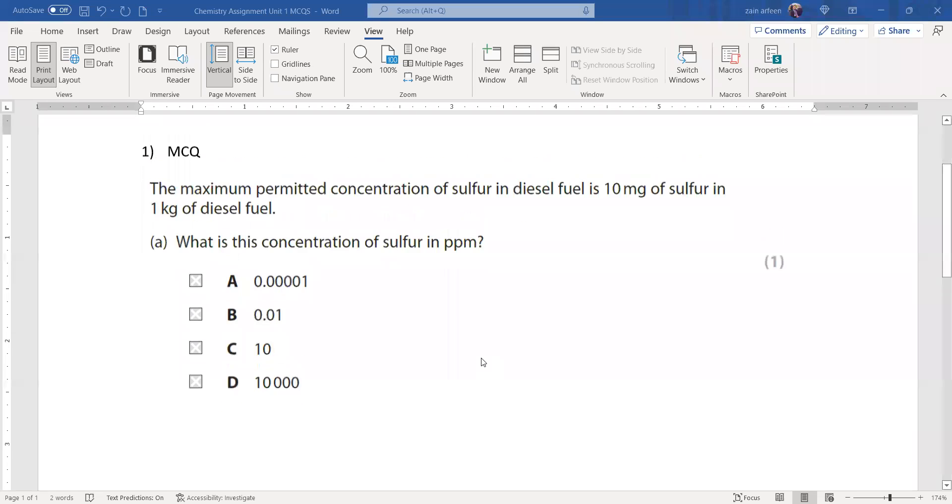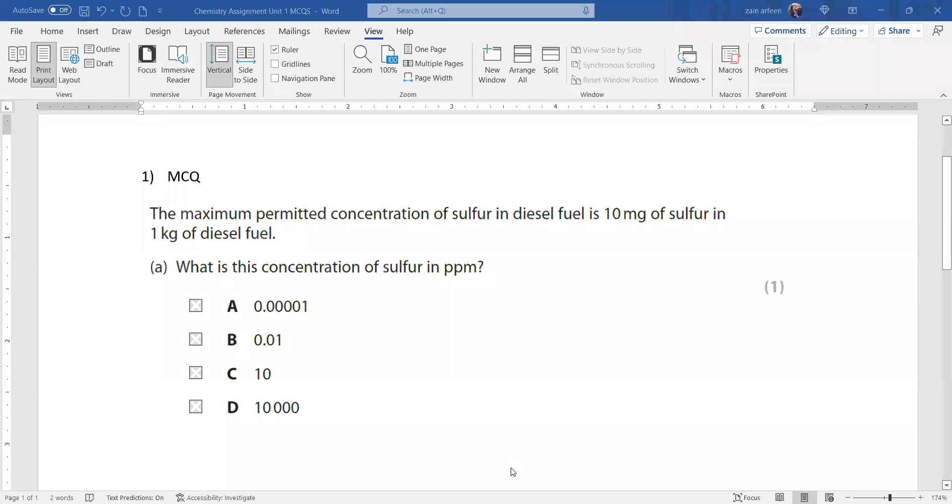In this question, the maximum permitted concentration of sulfur in diesel fuel is 10 milligrams of sulfur in 1 kilogram of diesel. What is the concentration in ppm?